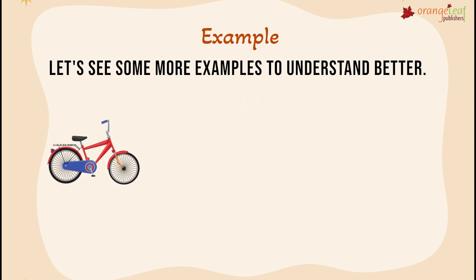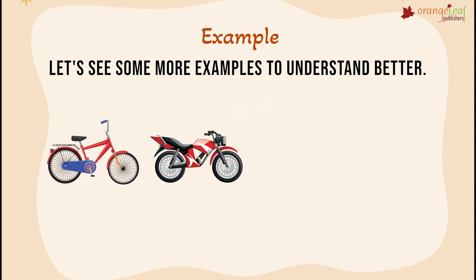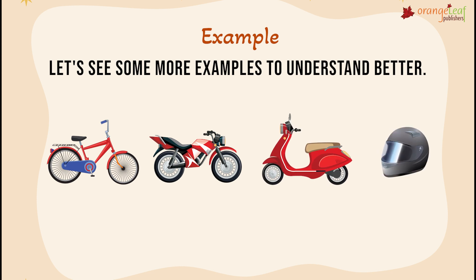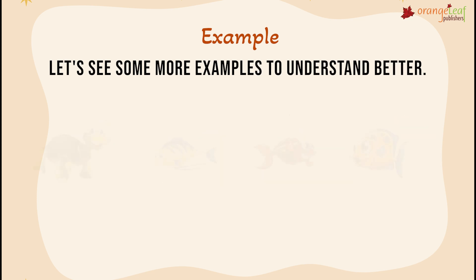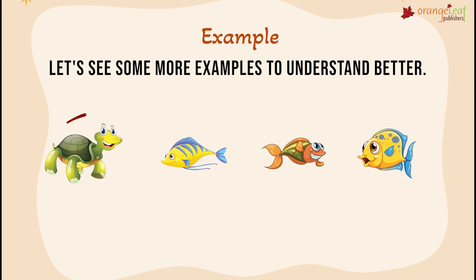Now, you can see a bicycle, a bike, a scooter, and a helmet. Here, helmet is odd because the rest of the three pictures are vehicles. And here, tortoise is odd because the rest of the three pictures are fish.